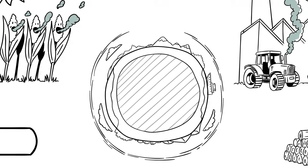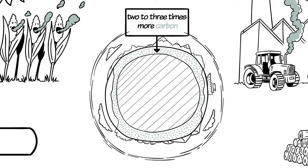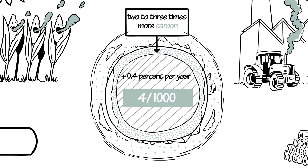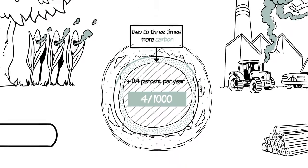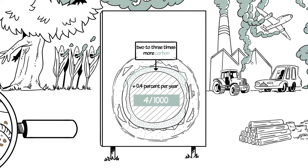The world's soil contains two to three times more carbon than the atmosphere. Increasing this storage of carbon by 0.4% per year, or four parts per thousand, in the top 30 or 40 centimeters of the soil could stop the increase of CO2 in the atmosphere. This is the proposal of the 4 parts per thousand soils for food security and the climate initiative.